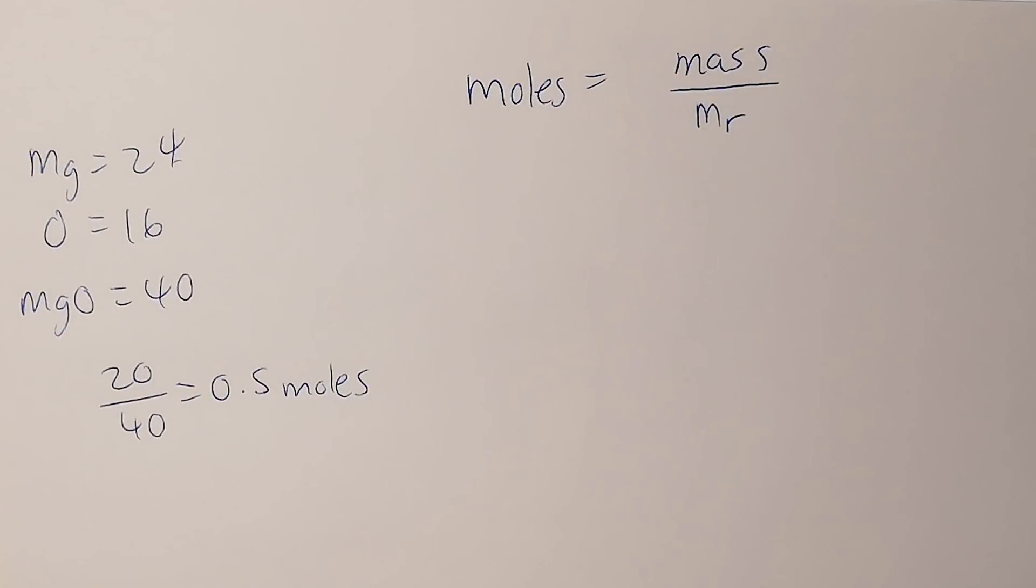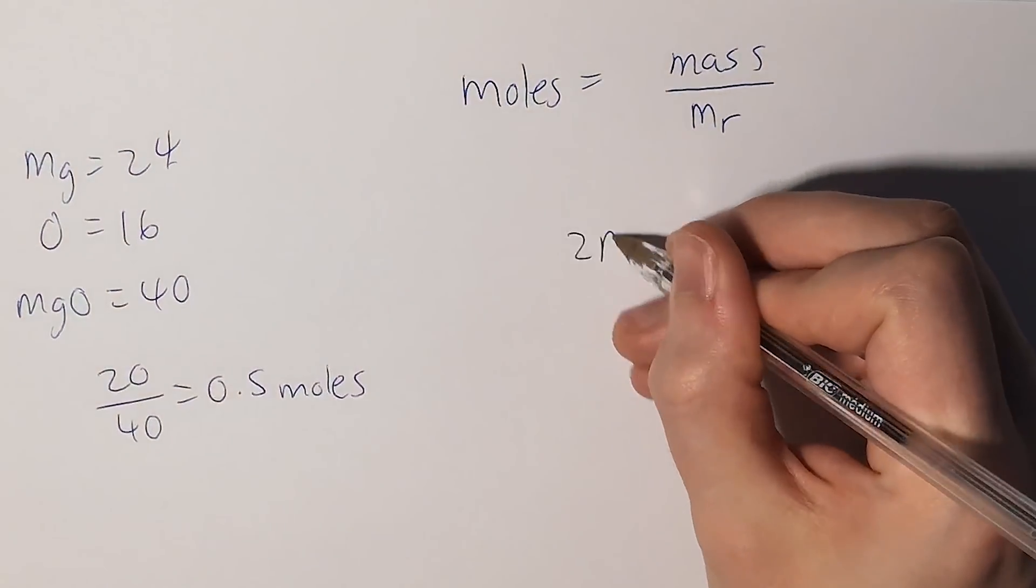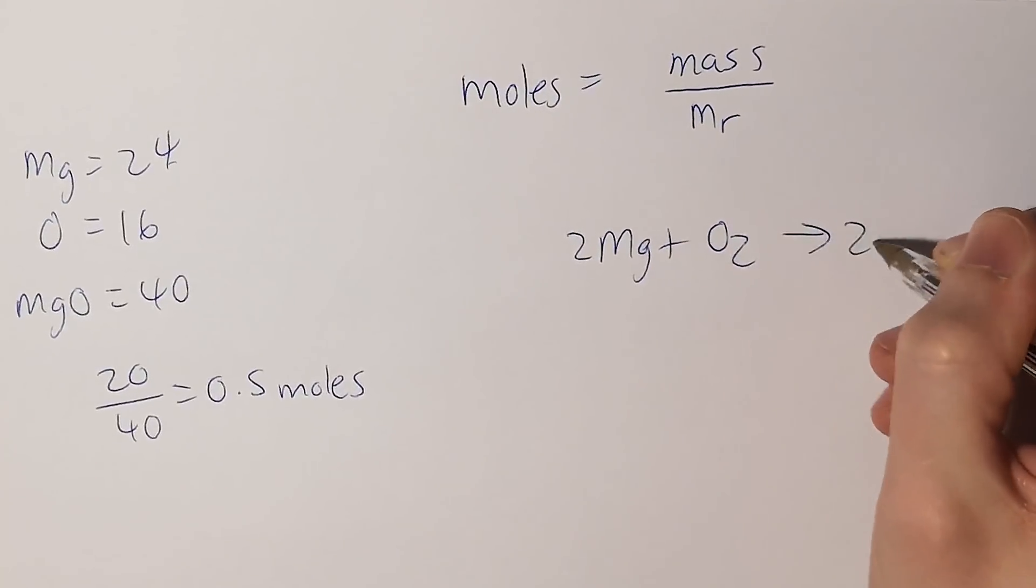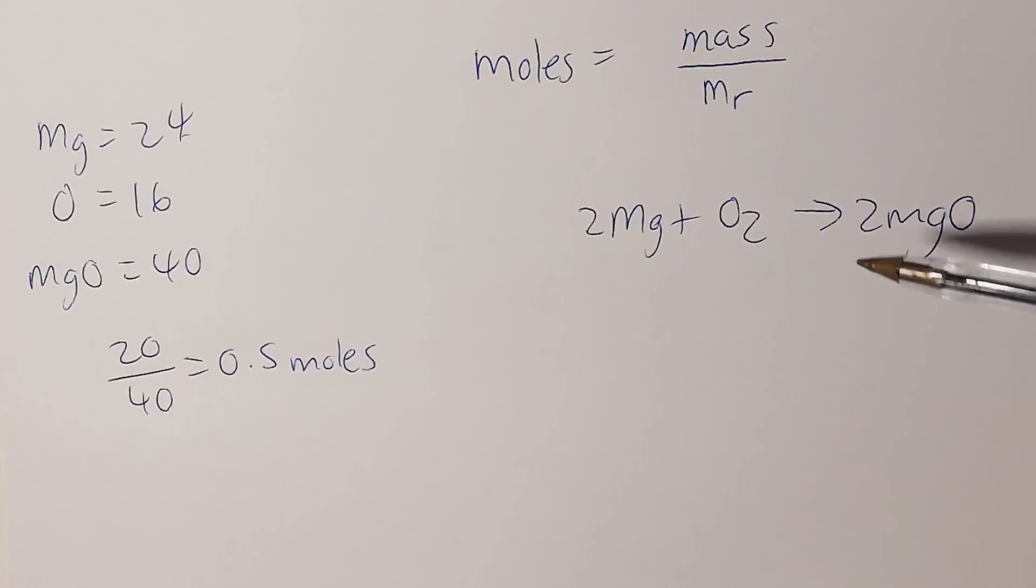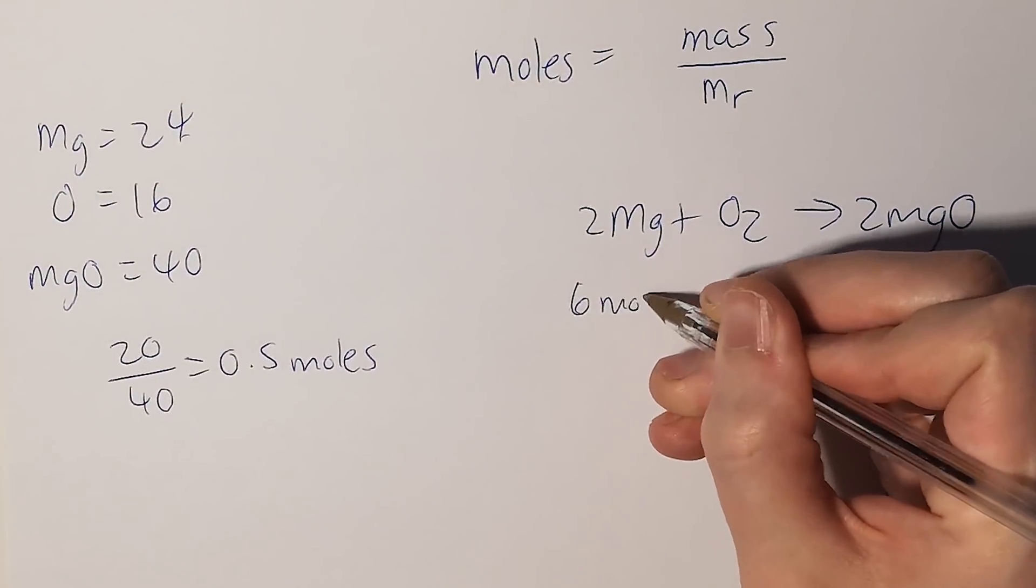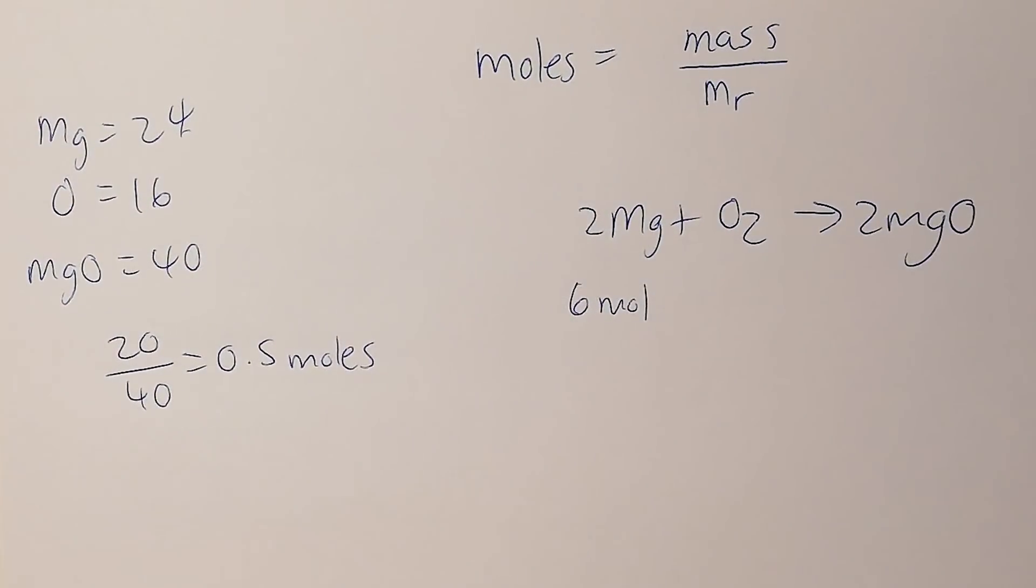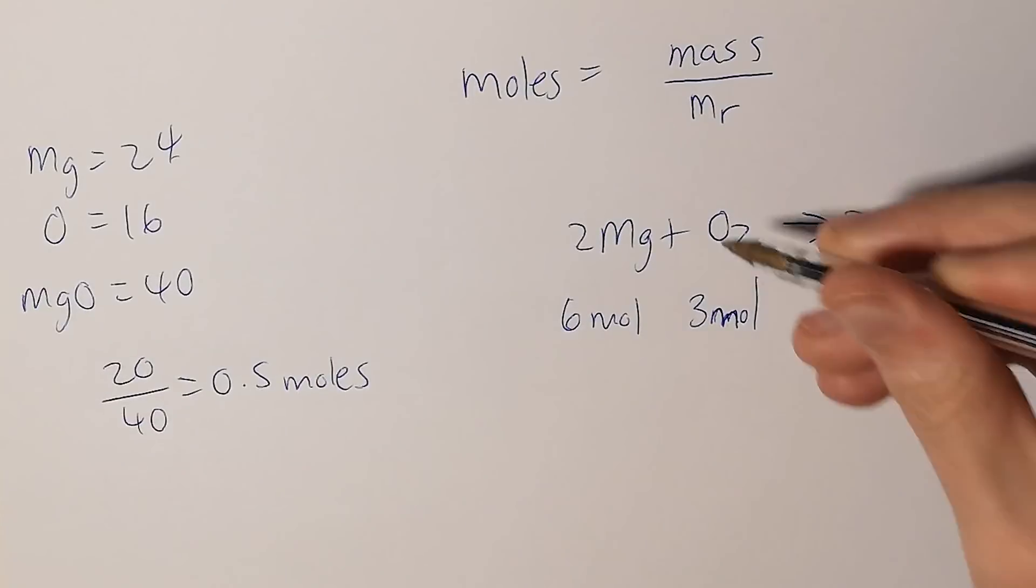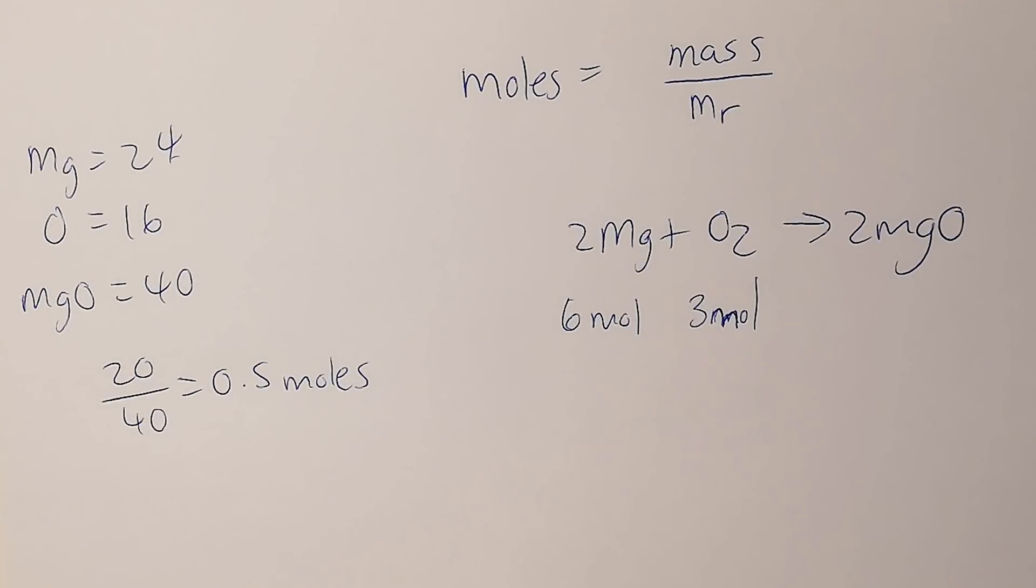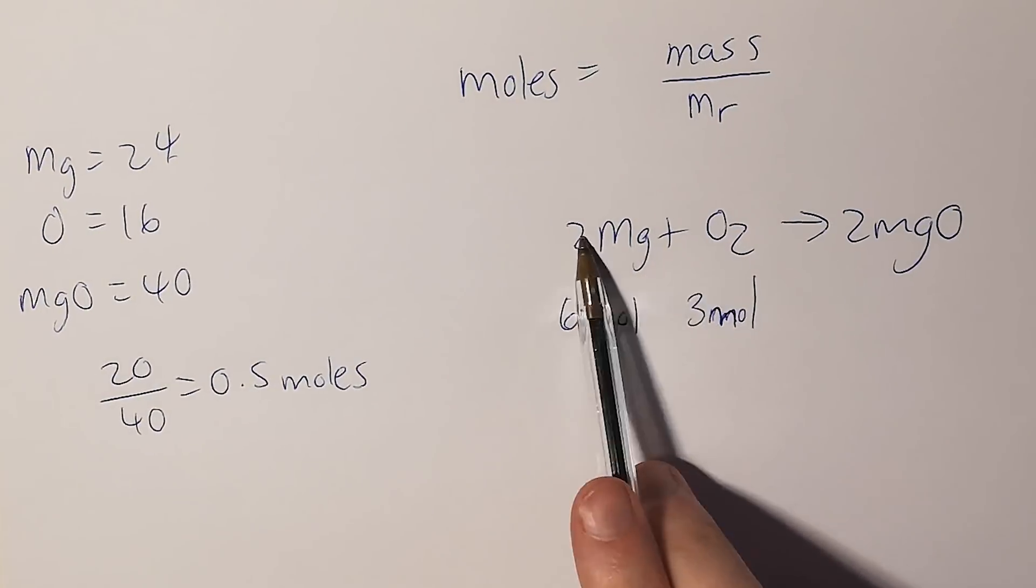You may be asked to calculate the number of moles needed to react fully with a certain chemical. In our equation, 2Mg + O₂ → 2MgO, we're told that 2 moles of magnesium react with one mole of oxygen. So if I have 6 moles of magnesium, I'm only going to need 3 moles of oxygen to fully react. This is a ratio of how many moles of each element are needed to fully react.